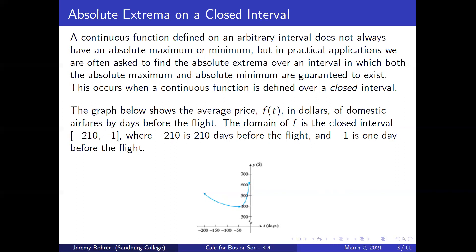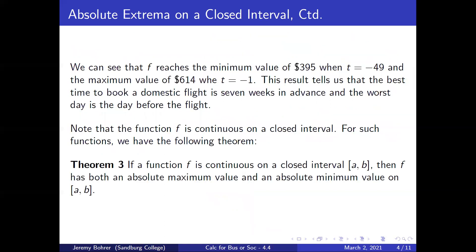The graph below shows the average price f(t) in dollars of domestic airfares by days before the flight. The domain of f is the closed interval [-210, -1], where -210 is 210 days before the flight and -1 is one day before the flight. We can see that f reaches a minimum value of $395 when t = -49, and a maximum value of $614 when t = -1. This tells us that the best time to book a domestic flight is seven weeks in advance, and the worst day is the day before the flight.